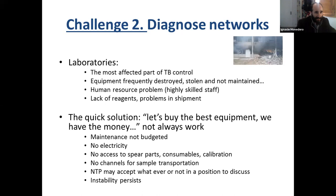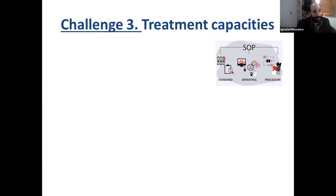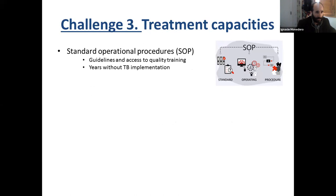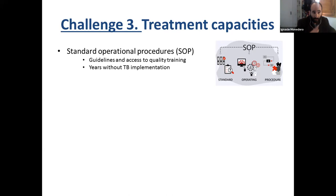Challenge three is treatment capacities. The first issue is standard operational procedures: many people just left and the NTP is without trained staff. Sometimes the procedures and historical reflection of the NTP are completely lost. People don't know how to do or what to do. This is the example in Libya — during 10 to 12 years, everything was destroyed, guidelines were outdated, and it was necessary to start from the very beginning. If we have key staff maintained in the country, things may work.